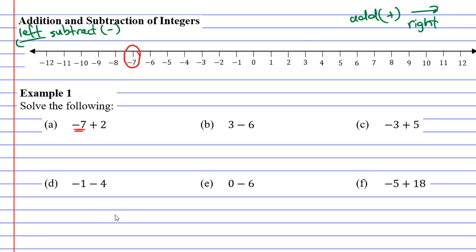So when we look at question A, we're adding 2, so we're going to the right. Because we're adding 2, we're going to the right in 1, 2 steps. You'll notice that we land on negative 5. That gives us our solution for question A, negative 5.